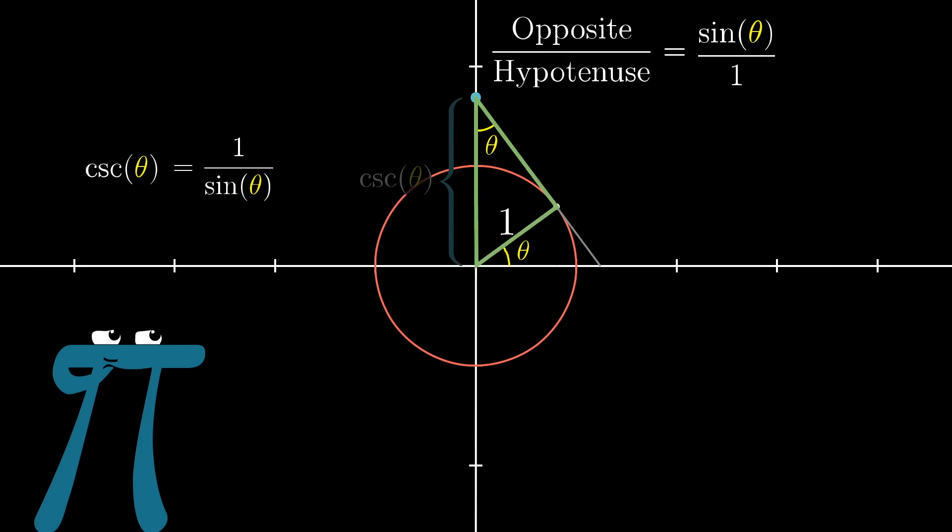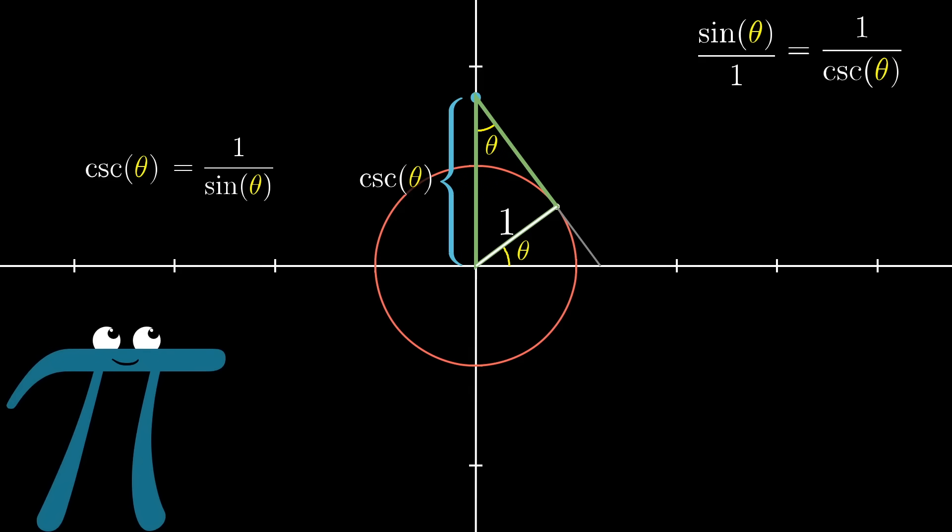Now when we look at the larger triangle, the side opposite theta is that radial line of length 1. And the hypotenuse is now this length on the y-axis, the one that I'm claiming is the cosecant. If you take the reciprocal of each side here, you see that this matches up with the fact that the cosecant of theta is 1 divided by sine. Kind of cool, right?